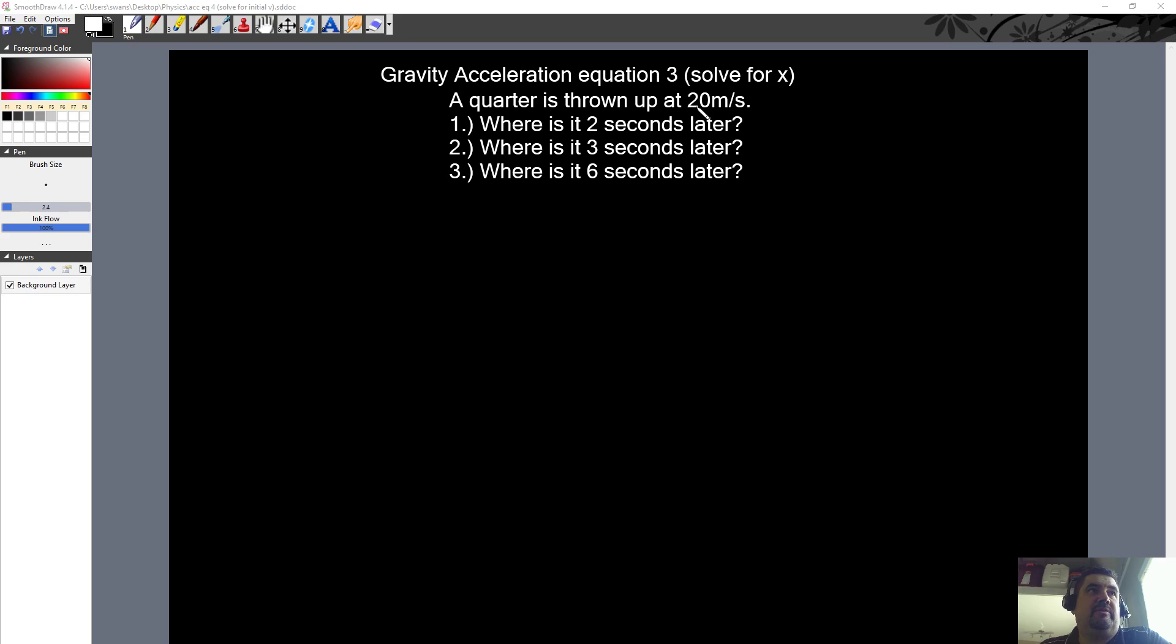So a quarter is thrown up at 20 meters per second. Where is it two seconds later? Where is it three seconds later? And where is it six seconds later? So let's do each one real quick.